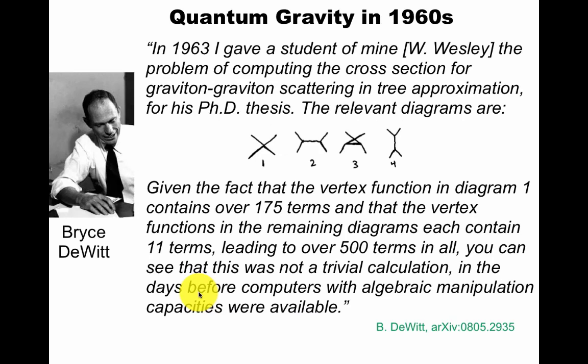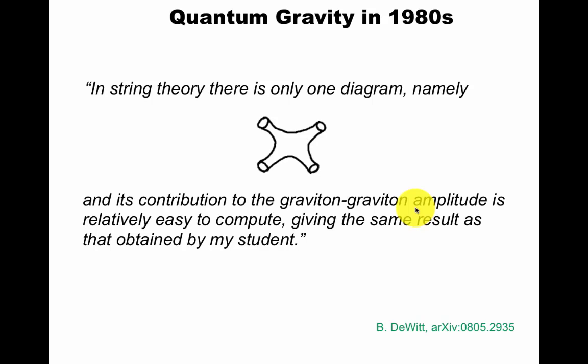This is beautifully described in the biography of Bryce DeWitt. In 1963, I gave a student of mine the problem of computing the cross-section for graviton-graviton scattering. The relevant Feynman diagrams would be these. They lead to over 500 terms, but the final result is very simple. In string theory, there's only one diagram. Its contribution is relatively easy to compute. String theory is much better than he originally thought.